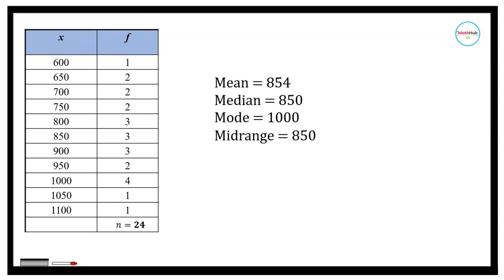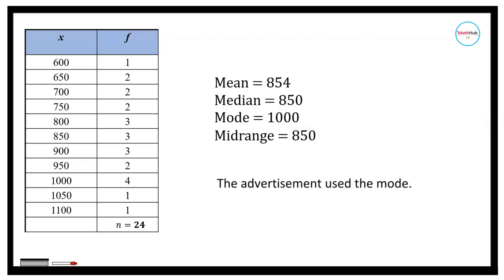Going back to the second question — which measure of central tendency was given in the advertisement? Based on our computation, 1,000 words per minute is not the mean or the average, but rather it is the mode for the data set. Therefore, the measure of central tendency given in the advertisement was the mode.